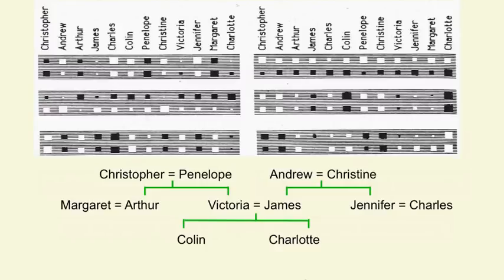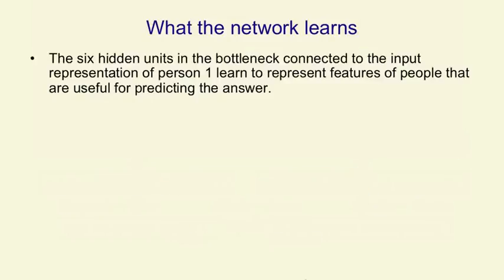By now you've probably realized that neuron represents what generation somebody is — it has big positive weights to the oldest generation, big negative weights to the youngest generation, and intermediate weights roughly zero for the intermediate generation. So that's really a three-valued feature telling you the generation of the person. If you look at the bottom grey rectangle on the left-hand side, it has a negative weight to Andrew, James, Charles, Christine, and Jennifer — and if you look at the English family tree, those people are all in the right-hand branch. So that unit has learned to represent which branch of the family tree someone is in, a very useful feature for predicting the output person. The networks in the bottleneck have learned to represent features of people that are useful for predicting the answer, and we didn't tell it anything about what features to use — it figured out that nationality, branch of family tree, and generation are good features for expressing the regularity in this domain.